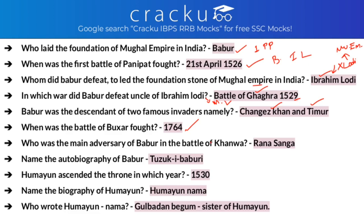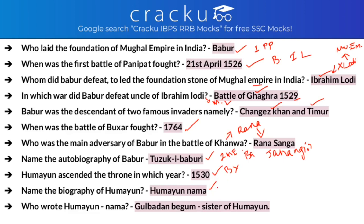Who was the main adversary of Babar in the Battle of Kanva? It was Rana Sanga. Name the autobiography of Babar — it is Tuzuk-i-Baburi. Only two Mughal emperors wrote their own autobiographies: Babar and Jahangir. The book by Jahangir is called Tuzuk-i-Jahangiri. Humayun ascended the throne in 1530 after the death of Babar. The biography of Humayun is called Humayun Nama, written by his sister Gulbadan Begum.